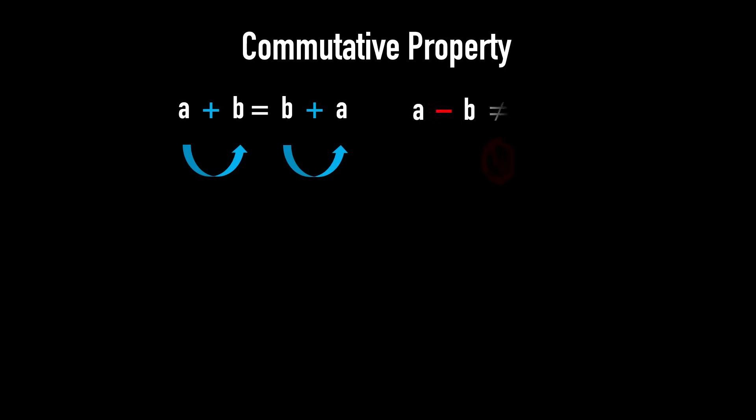You've also been strongly reminded that you must not change the order when subtracting. However, at some point later, when simplifying an expression like a plus b minus a plus b, you may have been told to change the order between the second term b and the third term a, so you could combine like terms with the first a and the fourth b.